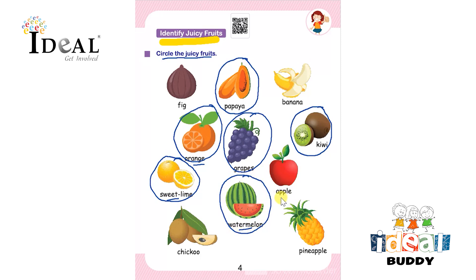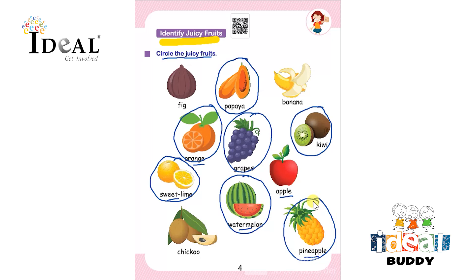Next is apple — apple is not a juicy fruit. Next is chiku — chiku is not a juicy fruit. After that it is pineapple — pineapple is also a juicy fruit. So here the child has to identify juicy fruits, circle them, and complete the worksheet. Thank you.